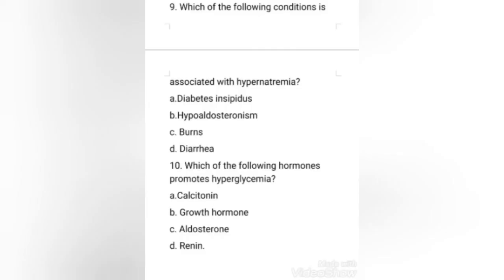Next question: which of the following hormones promotes hyperglycemia? Options: calcitonin, growth hormone, aldosterone, or renin. The right answer is option B, growth hormone. Growth hormone and cortisol promote gluconeogenesis, and epinephrine stimulates glycogenesis.